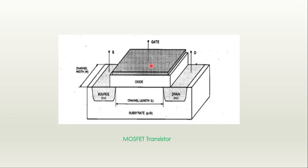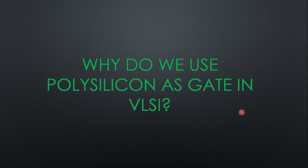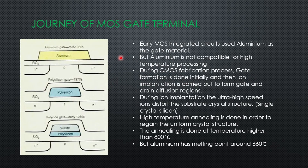This is why it was named MOS transistor. But later, the gate was truly not metal — it was polysilicon, which is polycrystalline silicon. So why do we use polysilicon or polycrystalline silicon as the gate in VLSI integrated circuits? Let's answer this question. The figure on the left shows the MOS gate terminal as time passed.